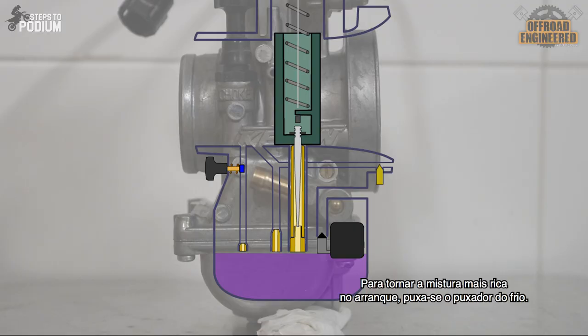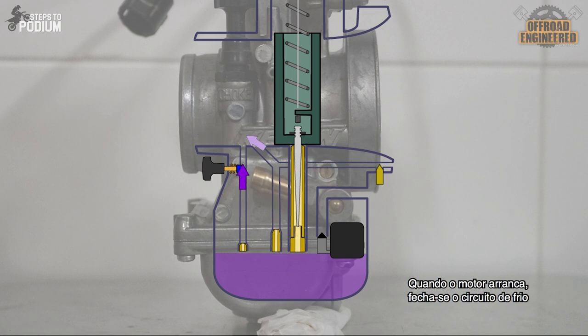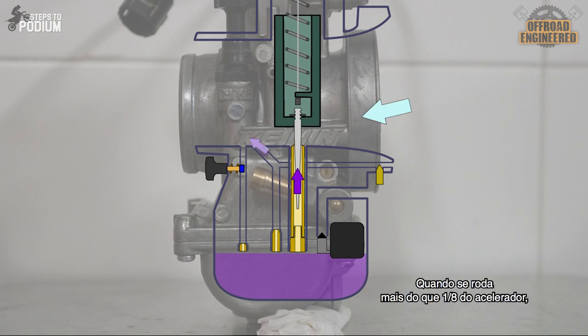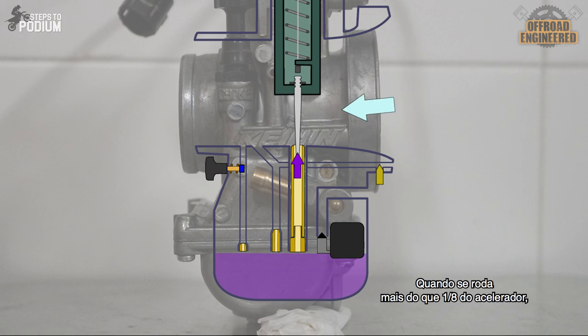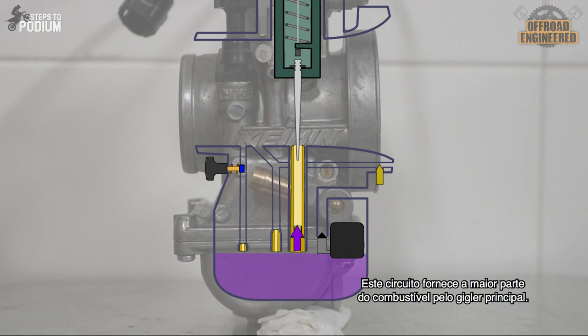To enrich the mixture on startup we pull the choke, which provides additional fuel to make it easier for the engine to start when it's cold. Once the engine starts, the choke closes and the idle circuit kicks in. This circuit provides a small but steady amount of fuel whenever the engine is running on idle and a little over idle through the pilot jet. When you twist more than around one eighth of throttle, the main circuit steps in which provides the main amount of fuel according to the throttle response through the main jet.